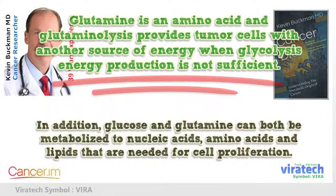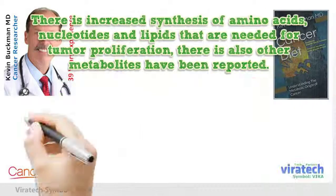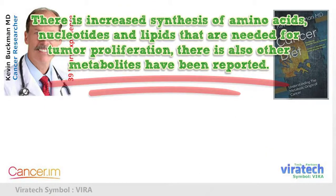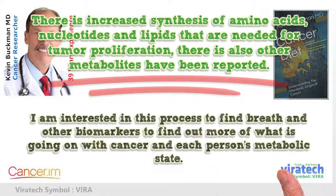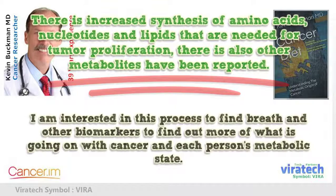In addition, glucose and glutamine can both be metabolized to nucleic acids, amino acids, and lipids that are needed for cell proliferation. There is increased synthesis of amino acids, nucleotides, and lipids that are needed for tumor proliferation. Other metabolites have also been reported. I am interested in this process to find breath and other biomarkers to find out more of what is going on with cancer and each person's metabolic state.